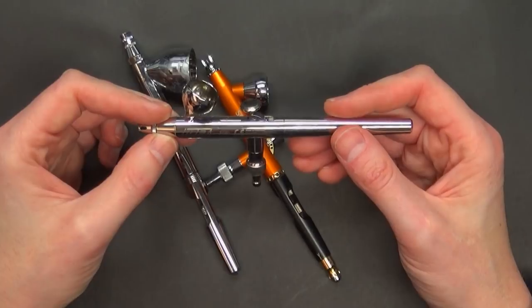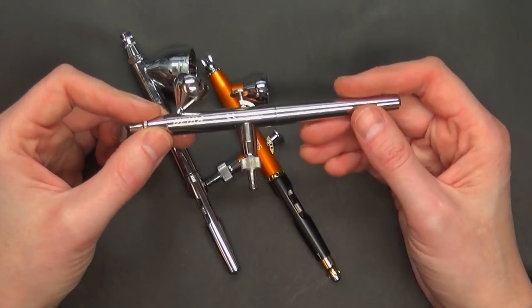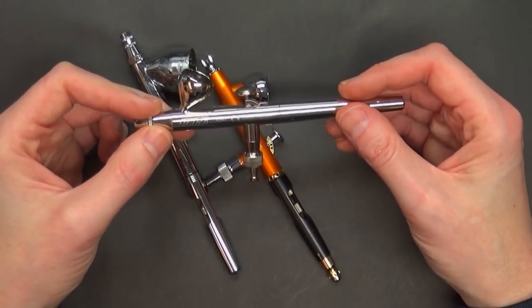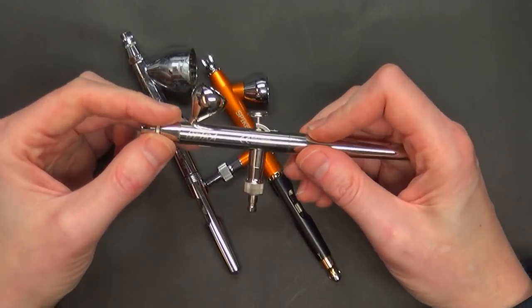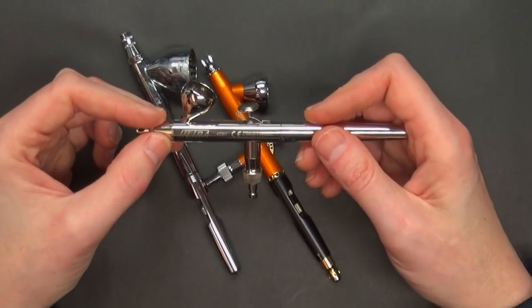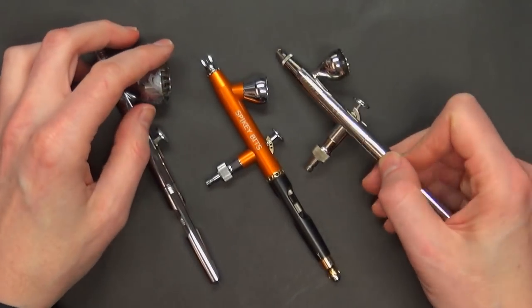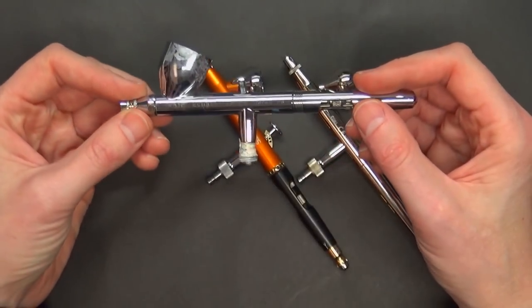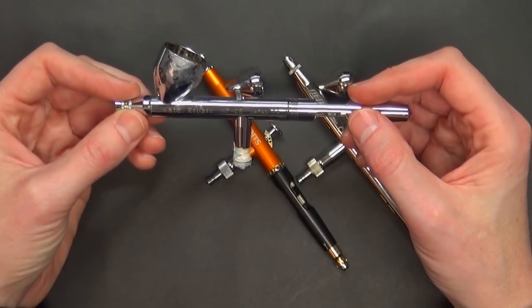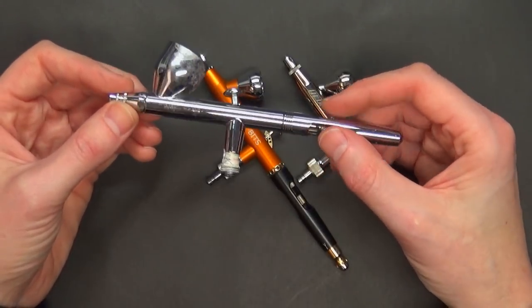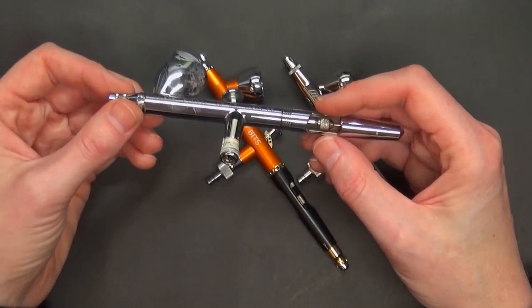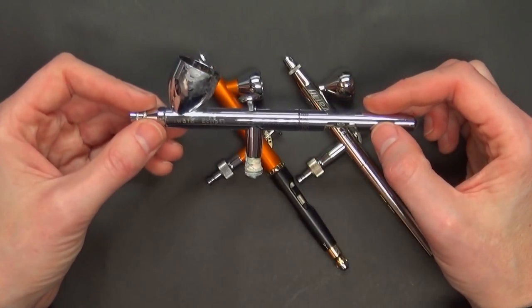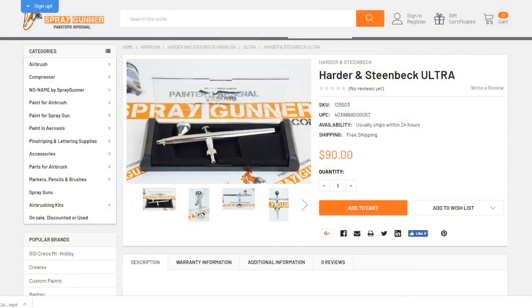You can get it from Spraygunner.com or anywhere else. Here in the states it's easy to order from Spray Gunner. If you're in Europe, you might want to order direct from Harder. I'm about to compare it to the more expensive Evolution brush that goes for about 300 bucks and the ubiquitous Iwata Eclipse that everybody seems enamored with. I know there's way better, more affordable solutions out there and I'm going to show you why.